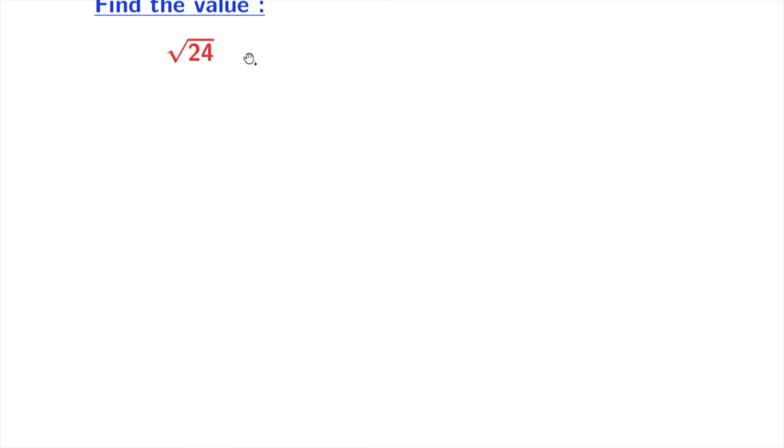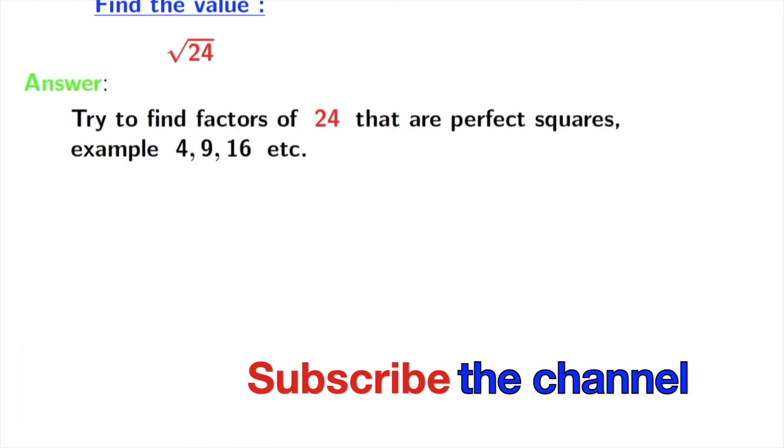In order to achieve our goal, we have to find the factors of 24 at first, and those factors should be perfect squares. We can take as an example 4, 9, 16, etc., which are squares of 2, 3, 4 respectively.